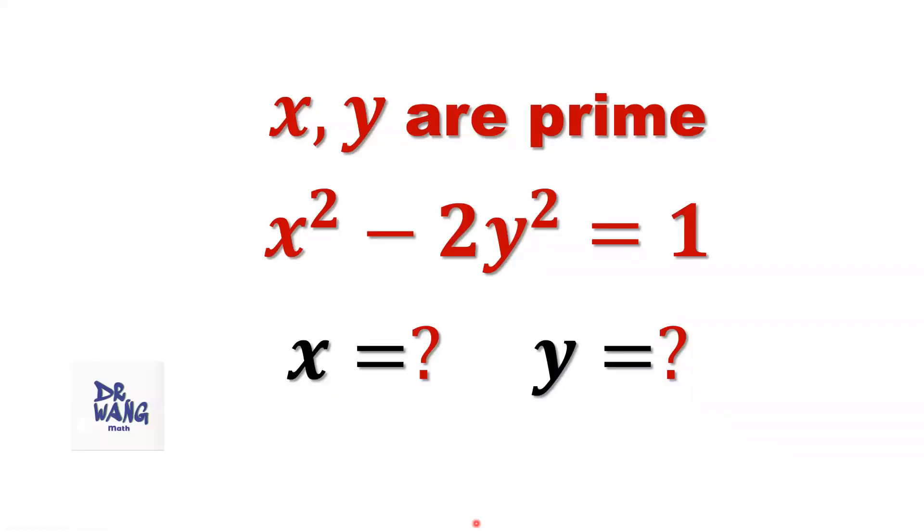Hello everyone, I'm Dr. N. Here I ask the question. If x and y are prime numbers and x squared minus 2y squared equals 1, what are the values of x and y?